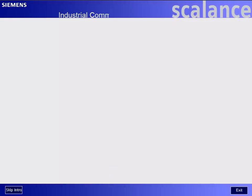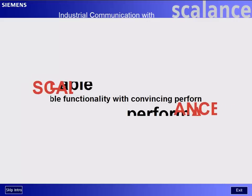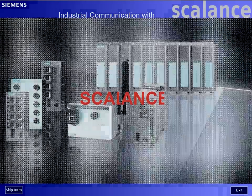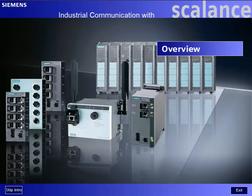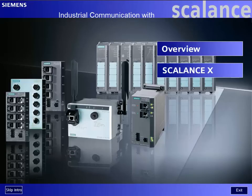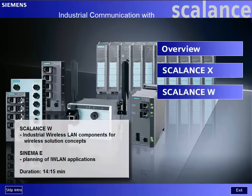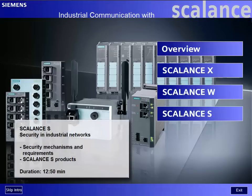Welcome to our demonstration system: Industrial Communication with Scalance. This demonstration system gives you a concise overview of the new SimaticNet components. We will first give you an outline of what modern industrial networks demand of topologies and active components. In the following chapters, we will describe in detail each component of the Scalance product family: Scalance X, the new industrial Ethernet switch family; Scalance W, the industrial wireless LAN components; and Scalance S, the industrial security modules of SimaticNet.